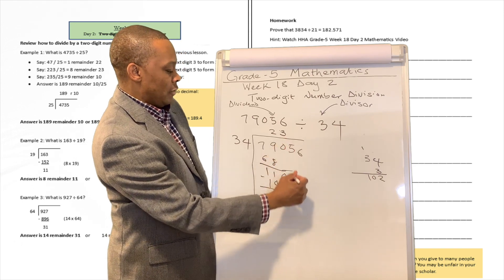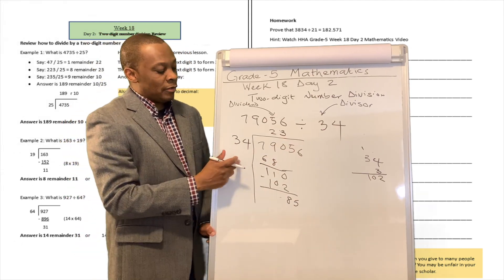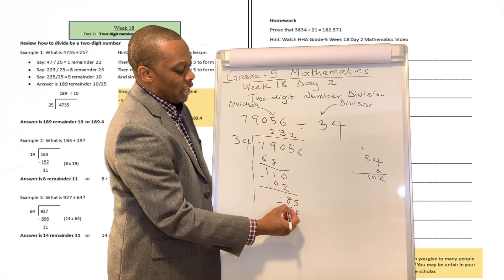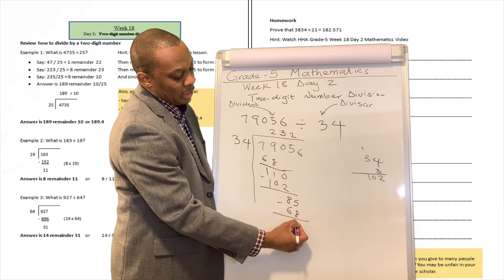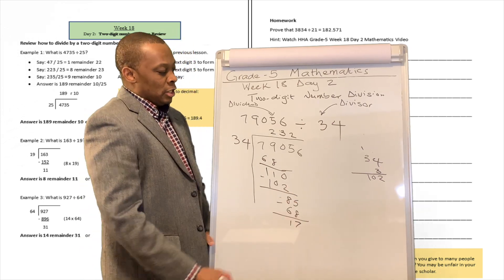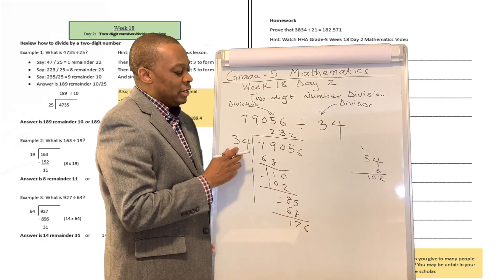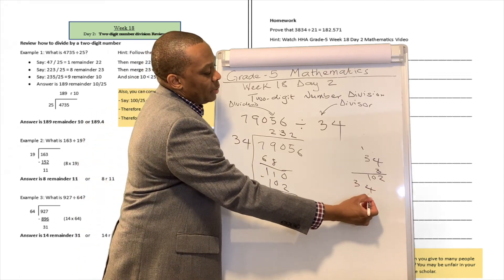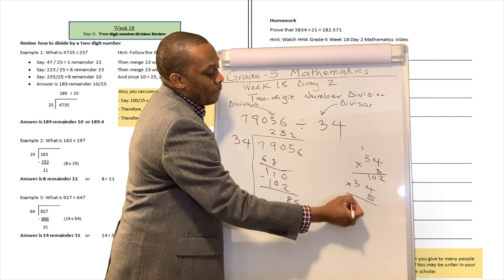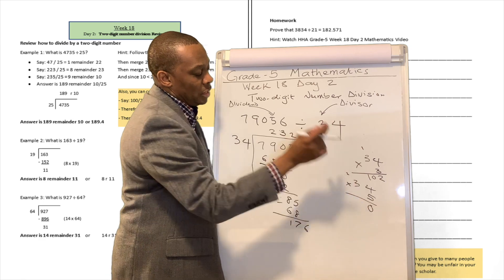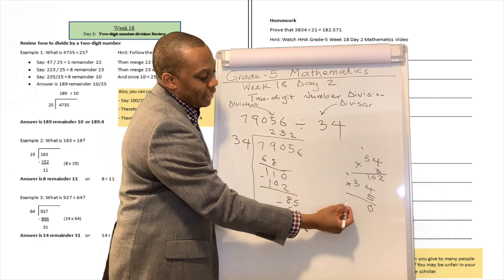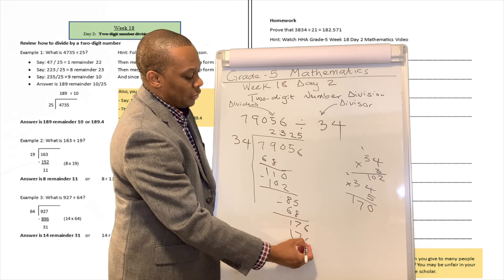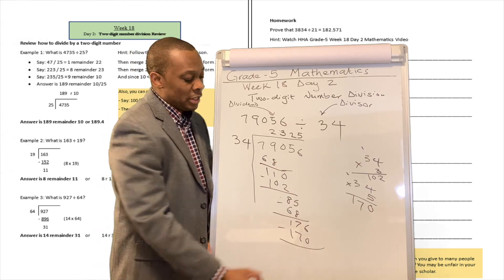Bring down your 5. How many 34s can we find in 85? That's going to be 2, because 2 times 34 is 68. Then 15 minus 8 is 7, and the next digit is 1. Bring down your 6. How many 34s can I find in 176? Let's try 34 multiplied by 5: 5 times 4 is 20, carry 2, 5 times 3 is 15, plus 2 is 17. So that's 170. And 176 minus 170 is 6.